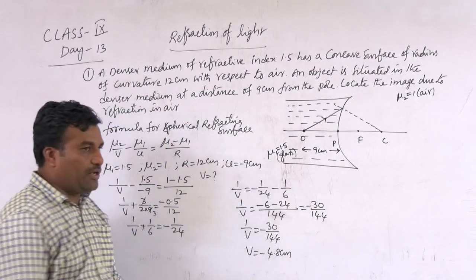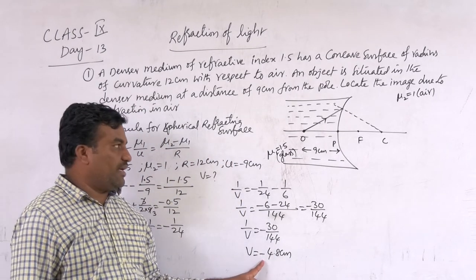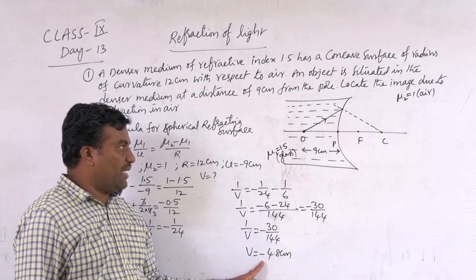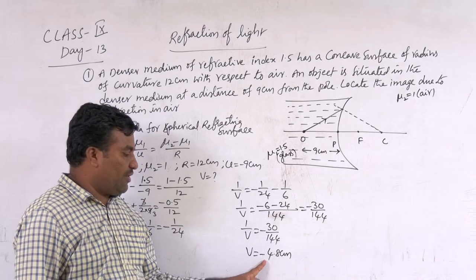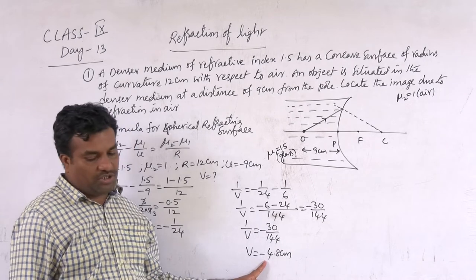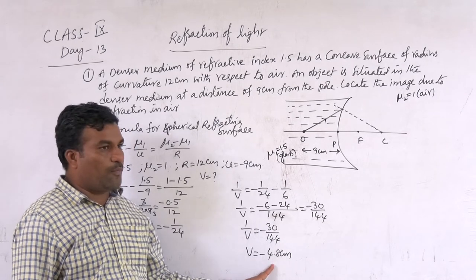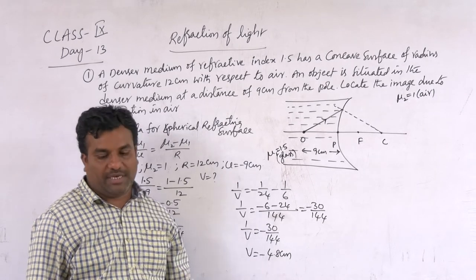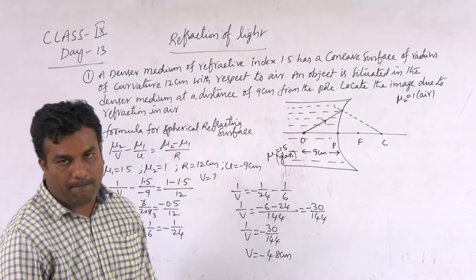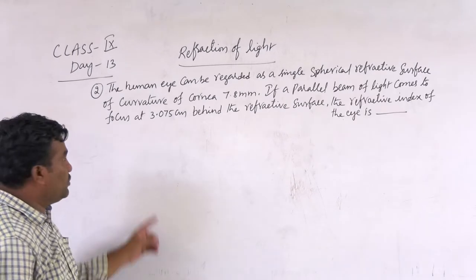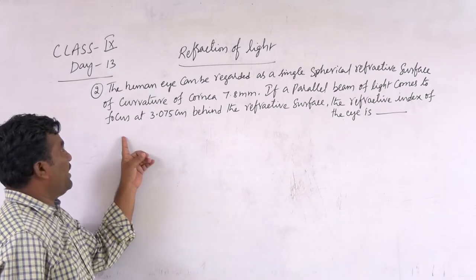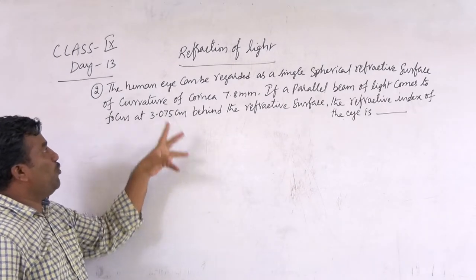So the indication is that we are getting a virtual image. We are getting the virtual image at a distance of 4.8 cm. Let's go with the next question.